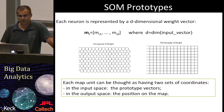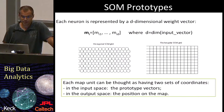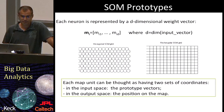Now let's see the prototypes, because each cell is represented by a prototype that is also called the weight vector, and it is d-dimensional, where d is the dimension of the input space. Basically, each map unit can be thought of as having two sets of coordinates: in the input space, the prototype vectors, and in the output space, the position on the map.